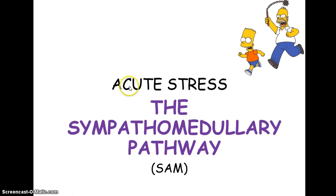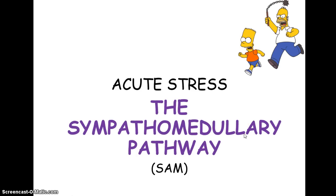We're going to be focusing first on acute stress, short-term stress, and we're going to be looking at this particular pathway. Please do not get put off by the name, because basically the pathway for acute stress is in the name. 'Sympatho' means the sympathetic nervous system; 'medullary' means it stimulates the medullary gland and its pathway. So, the sympatho-medullary pathway, also known as the SAM system — sympatho-adrenal medullary — refers to acute, short-term stresses.